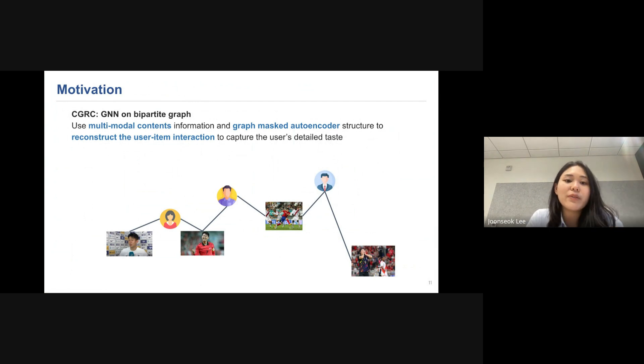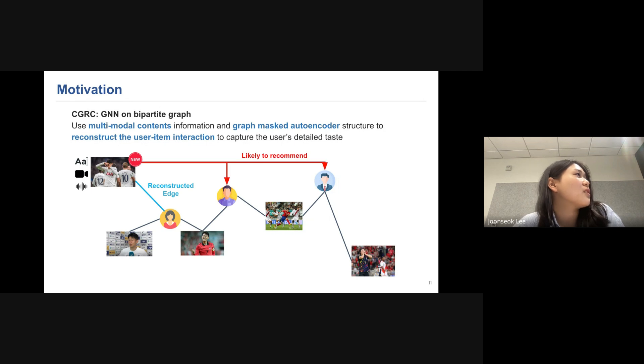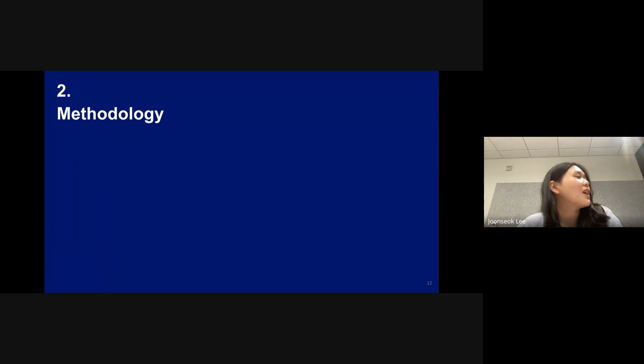So to tackle the previous problem, first we want to use the high order collaborative signals and use a graph neural network on user-item bipartite graph, not on item-item attribute graph. However, cold items do not have any edges. Therefore, we propose the model called CGRC that uses multi-modal context information and graph mask autoencoder structure to reconstruct the user-item interactions to capture the user detail taste. And I'll talk about our model CGRC in detail.